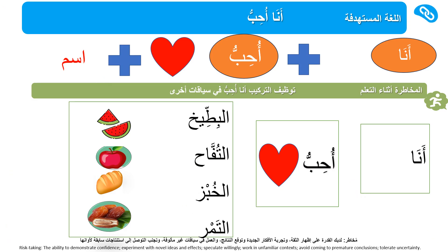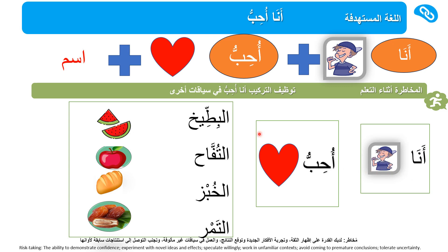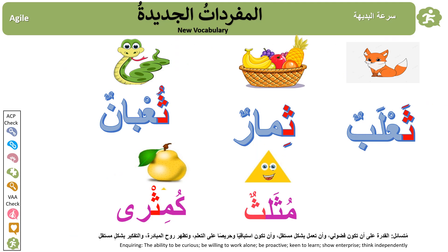Let's talk using this expression: أنا أُحِبُّ (Ana Uhybbu), which means 'I like.' Let's create sentences: أنا أُحِبُّ التفاح — I like apples. أنا أُحِبُّ الخبز — I like bread. أنا أُحِبُّ التمر — I like dates.